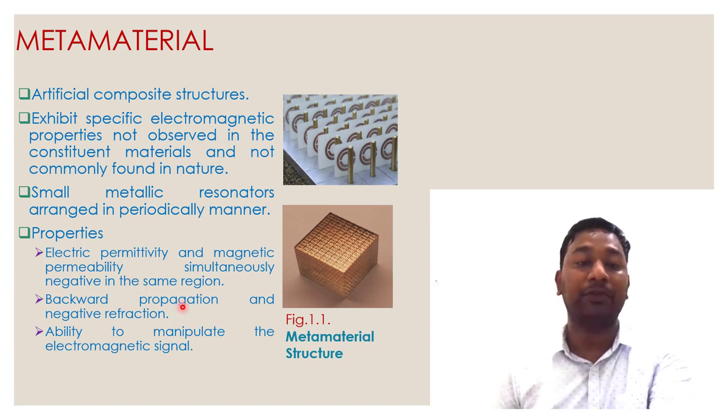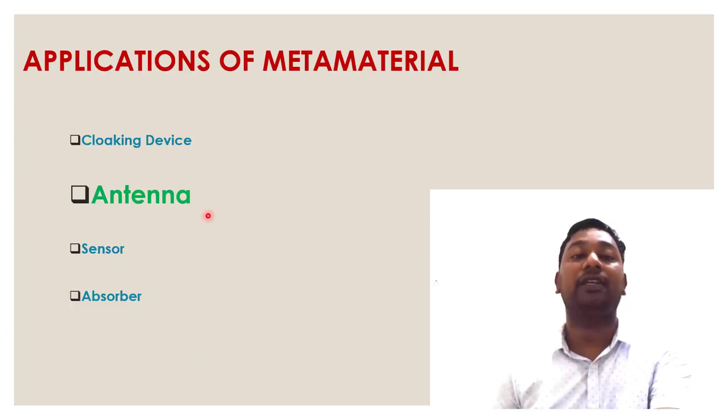Backward propagation and negative refraction ability to manipulate the electromagnetic signal. So that is the important property: ability to manipulate the electromagnetic signal. Those are the applications of metamaterial: cloaking device, antenna, sensor, and absorber.